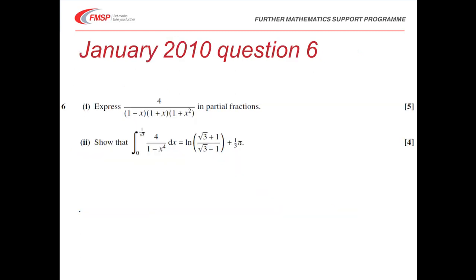We'll start with a question on partial fractions. The first part is to express a fraction in partial fractions. The denominator has two linear factors as at A2 core, plus a quadratic factor — the new element introduced at FP2. Part 2 asks us to show that the integral of 4 over (1 − x⁴) between given limits equals a specified expression. It's important to see that multiplying out the factors in Part 1 gives 1 − x⁴, so spotting the connection between the two parts is key.